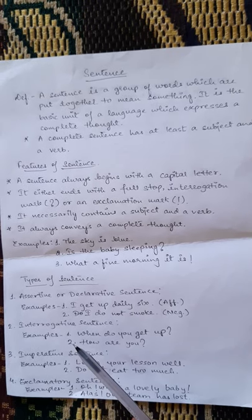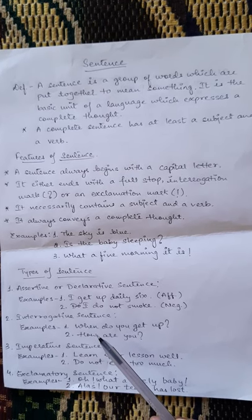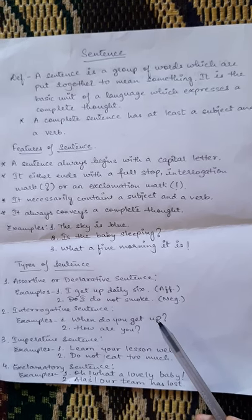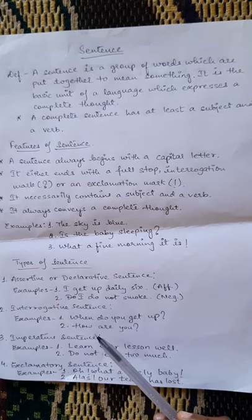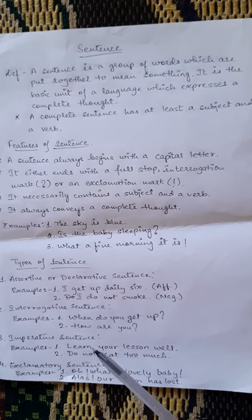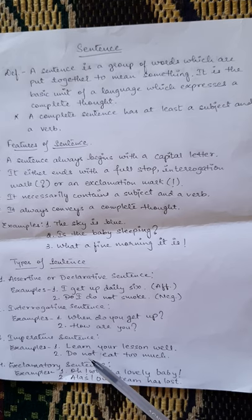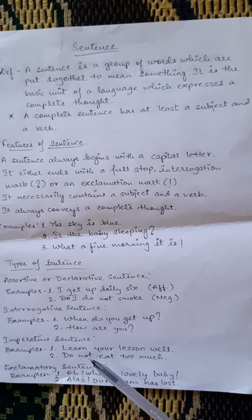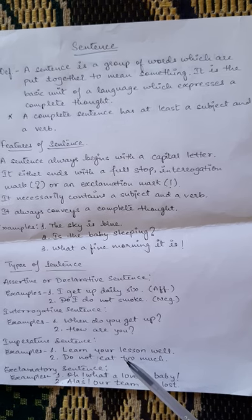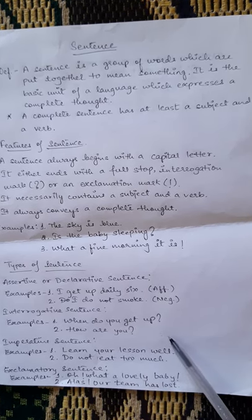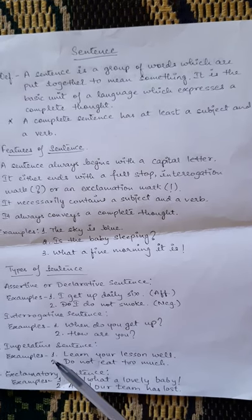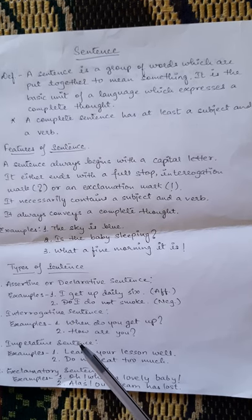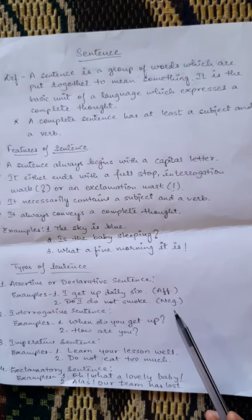The second type is the interrogative sentence. An interrogative sentence is always used with WH words including how. For example, 'When do you get up?' and 'How are you?' — both start with a capital letter and end with a question mark. Third is the imperative sentence, which tells or forbids you to do something. For example, 'Learn your lessons' or 'Do not eat too much.' Both come under imperative sentences. Imperative and assertive sentences are quite similar — both start with a capital letter and end with a full stop — but their meanings are different.